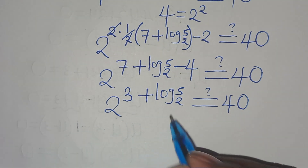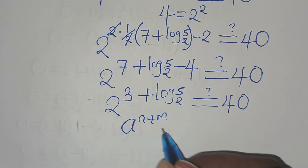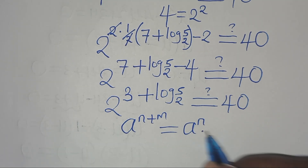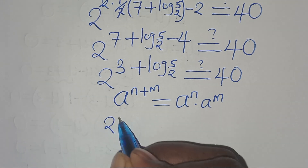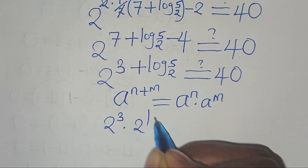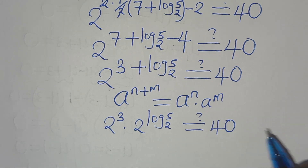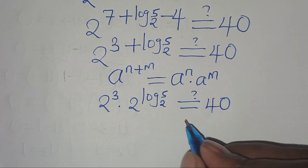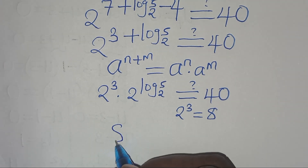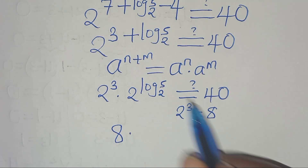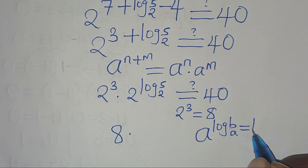So we have 2 to the power of (7 − 4) plus log₂5, equal to 40. This gives 2 to the power of 3 plus log₂5. This is in the form a^(n+m), which equals a^n multiplied by a^m. Applying this exponent property, we get 2^3 multiplied by 2^(log₂5), which should equal 40.